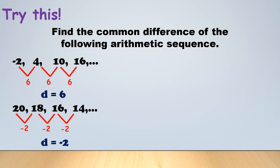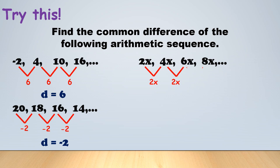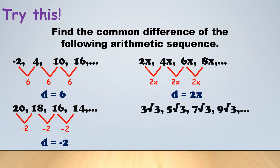Next example: 2x, 4x, 6x, 8x. Although there's a variable, the process is the same — subtract any consecutive terms. So 4x minus 2x = 2x, 6x minus 4x = 2x, 8x minus 6x = 2x. Therefore the common difference is 2x.